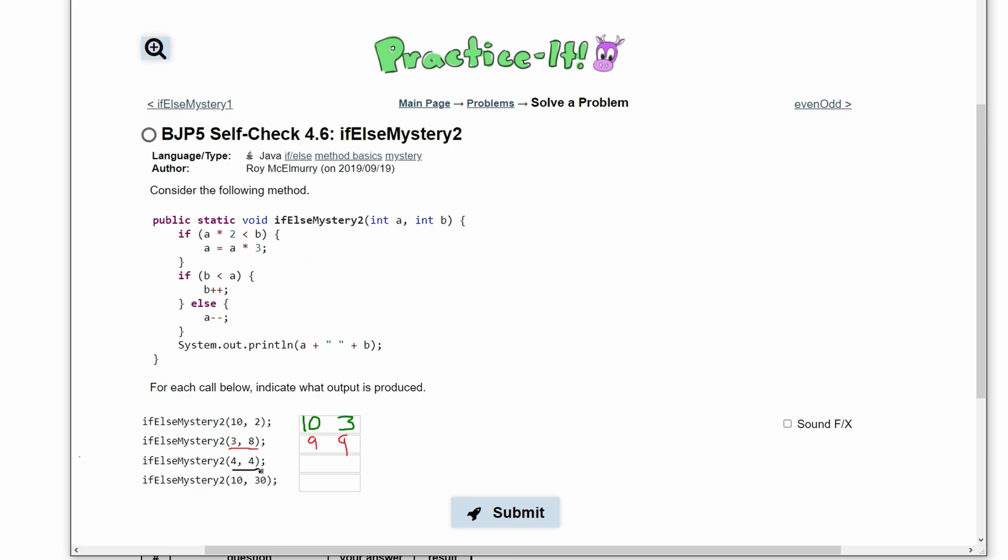In the next pass, we have 4 and 4. So our a is 4 and our b is 4. This if-statement is if our a times 2 is less than b, which will not be true, so we skip this and we move on to our next if-else statement. And it is if our b is less than a. Since they're both the same, we are not going to be in this if-statement. We are going to be in this else-statement, which has an a minus minus, which means our a is now going to equal 3. When we output this, we are going to have 3, a space, and 4.